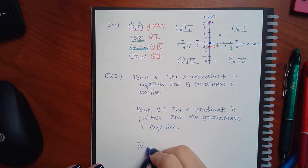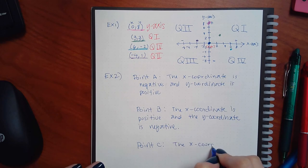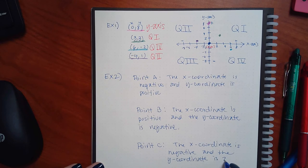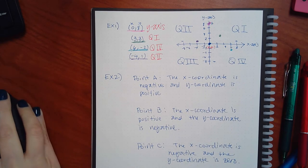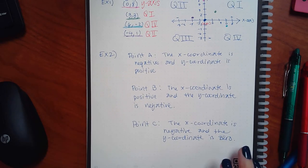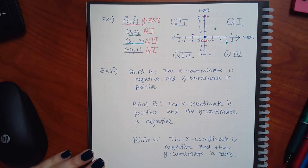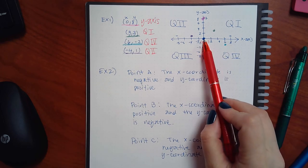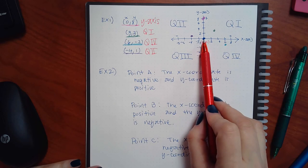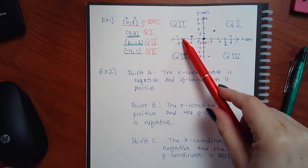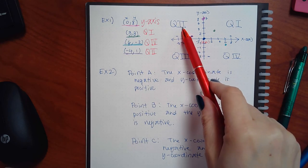They don't tell me the coordinates — all they do is tell me what the signs are. If I know the signs I can still tell what quadrant I'm in. For point A: starting at the origin, x is negative so I'm moving to the left some amount. Then y is positive so I move up. That puts me in quadrant two. For point B: x is positive so I move right, y is negative so I move down — that puts me in quadrant four.